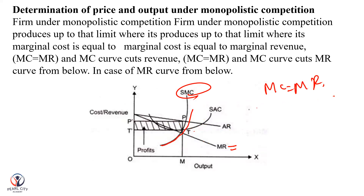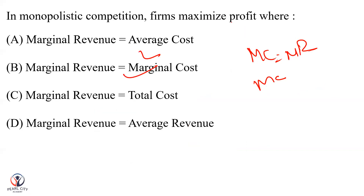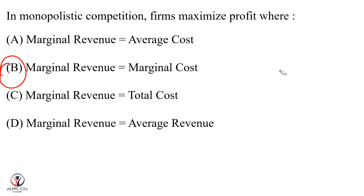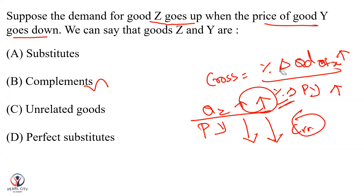If the end condition is satisfied, the producer determines the output and price efficiently. See you in the next video. Thank you so much.